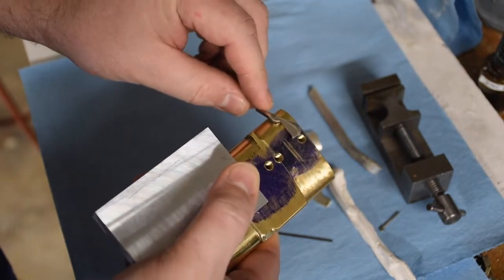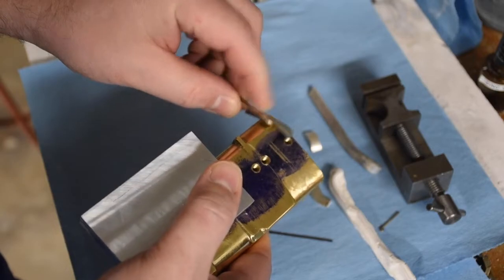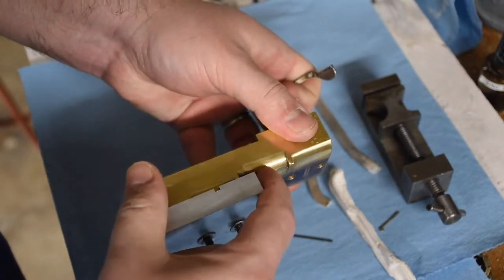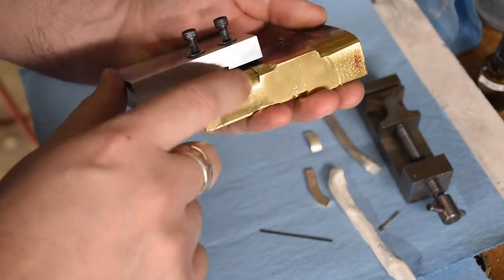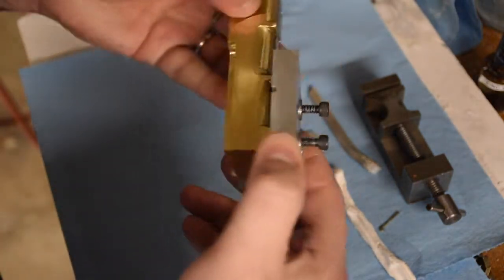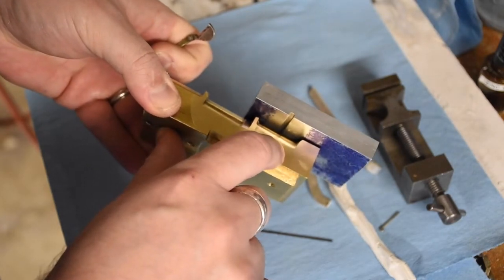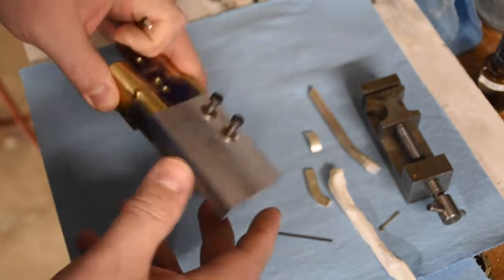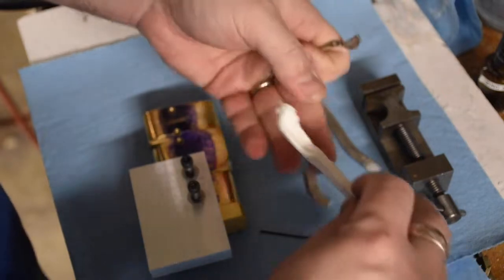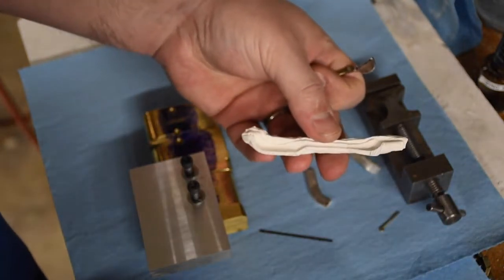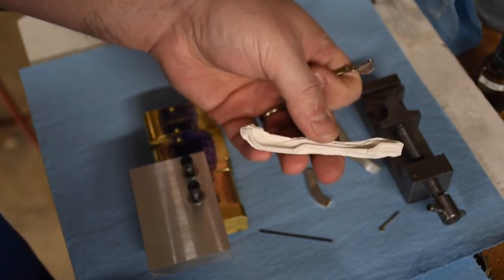Got a half inch radius here. Five sixteenths here. Quarter inch here. Those are the radii on these various keys that I was able to tell from the plaster castings.